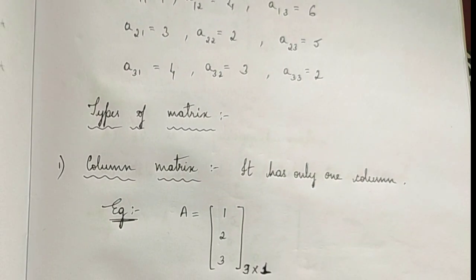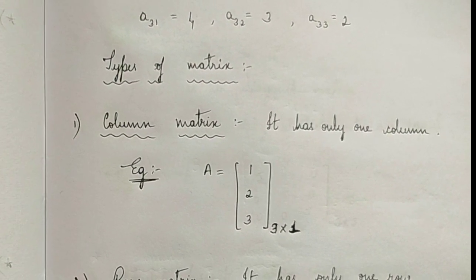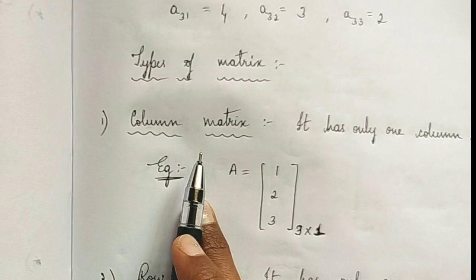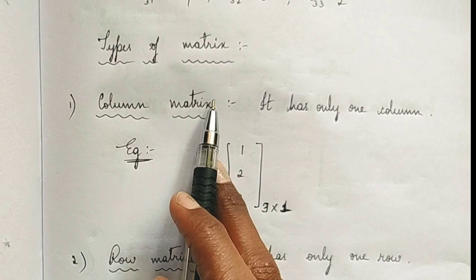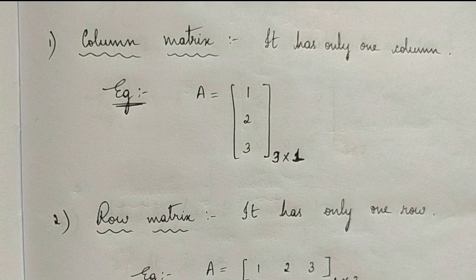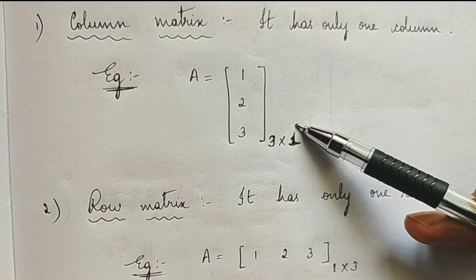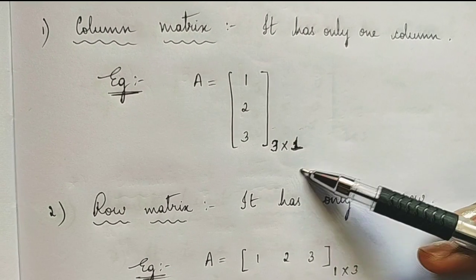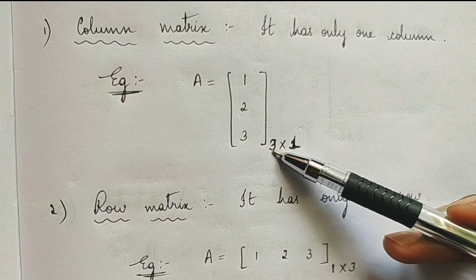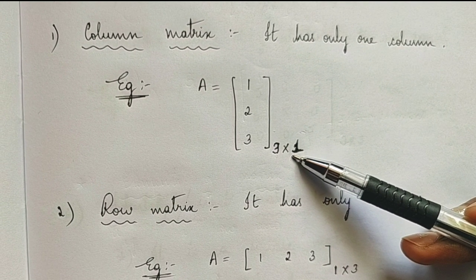Let's get into types of matrices. So we have many types of matrices. First, what is a column matrix? It has only one column. This type of matrix will always have only one column. The order of a column matrix is always m cross 1, because it has only one column. The number of rows may differ, but the number of columns is always 1.